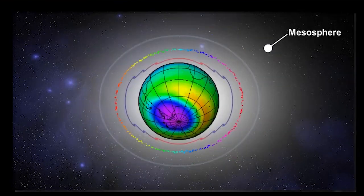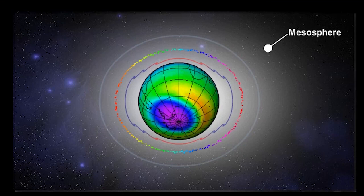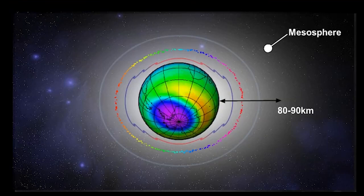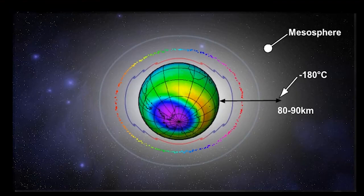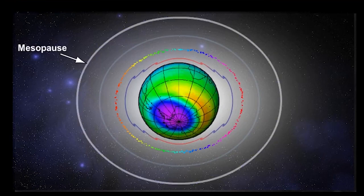Above the stratopause is a much cooler layer where the temperature continually decreases with height. This layer is called the mesosphere. It usually extends about 80 or 90 kilometers above the Earth's surface. At the top of this layer, we have some of the coolest temperatures encountered, sometimes as low as minus 180 degrees Celsius. The upper boundary to the mesosphere is called the mesopause.